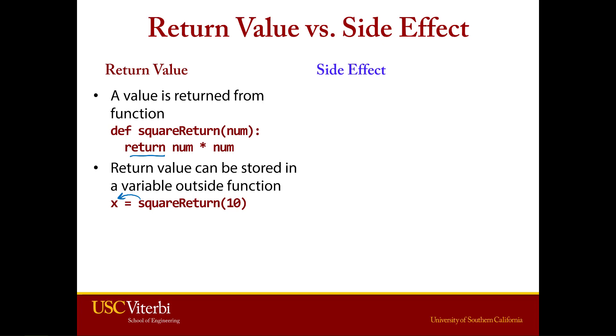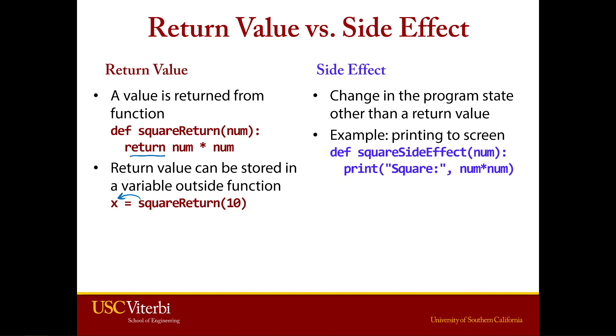Now a side effect is slightly different. What a side effect is, and this is sort of a vague definition, it's a general change in the program state other than your return value. A simpler way to think about it is it's anything that you notice that changes when you run the function except the return value. So the biggest example that we use all the time is printing.